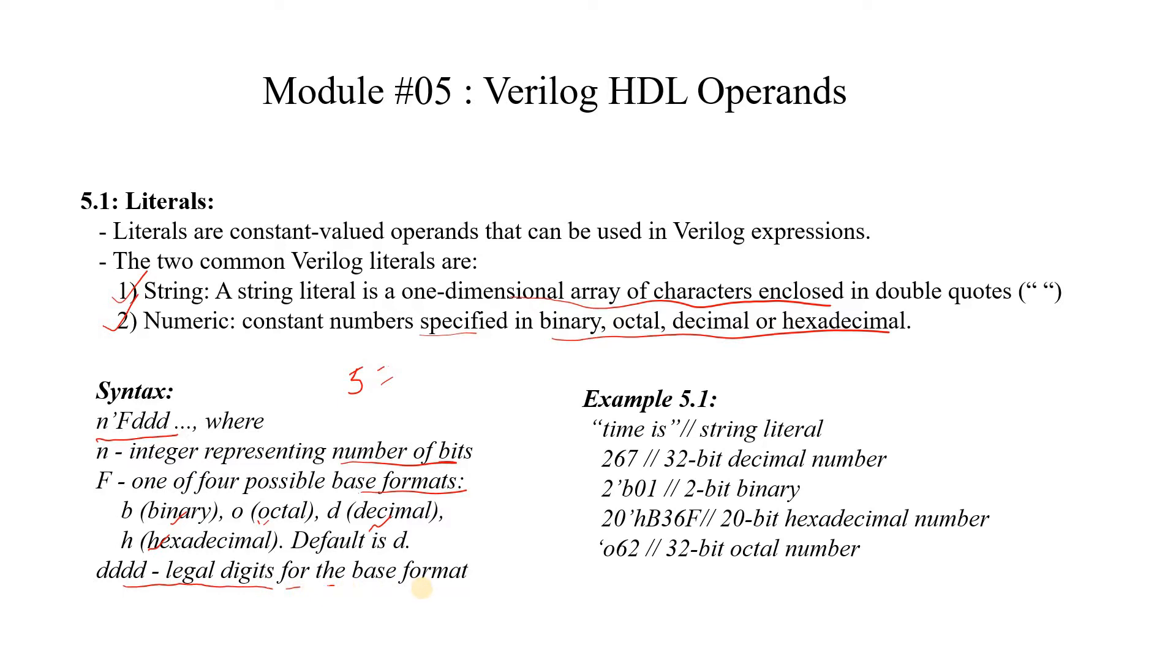Now let's see one example. Here we have time is a string literal. We have a value 267, this is a decimal number. Then we have a binary number, a hexadecimal number and an octal number. So operands which are a string or a constant value are called literals.